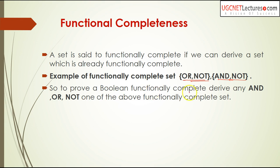To prove a boolean set is functionally complete, you need to derive either AND and NOT, or OR and NOT. If any arbitrary function is given and you must prove whether it is functionally complete, you need to show you can derive AND, OR, and NOT from it. If you can find AND and NOT, or OR and NOT, from any boolean function, then that function is said to be functionally complete. We will prove for only these combinations: either AND and NOT, or OR and NOT.